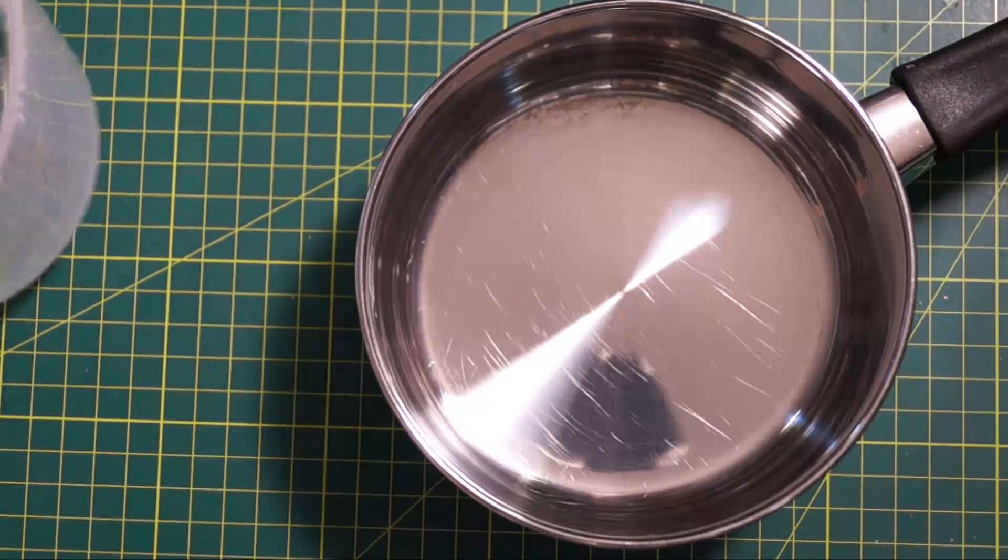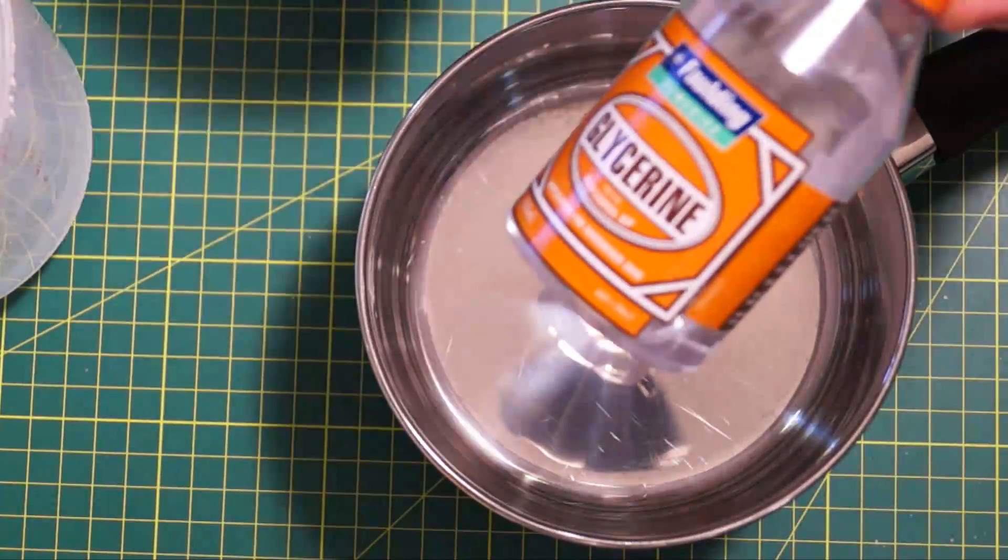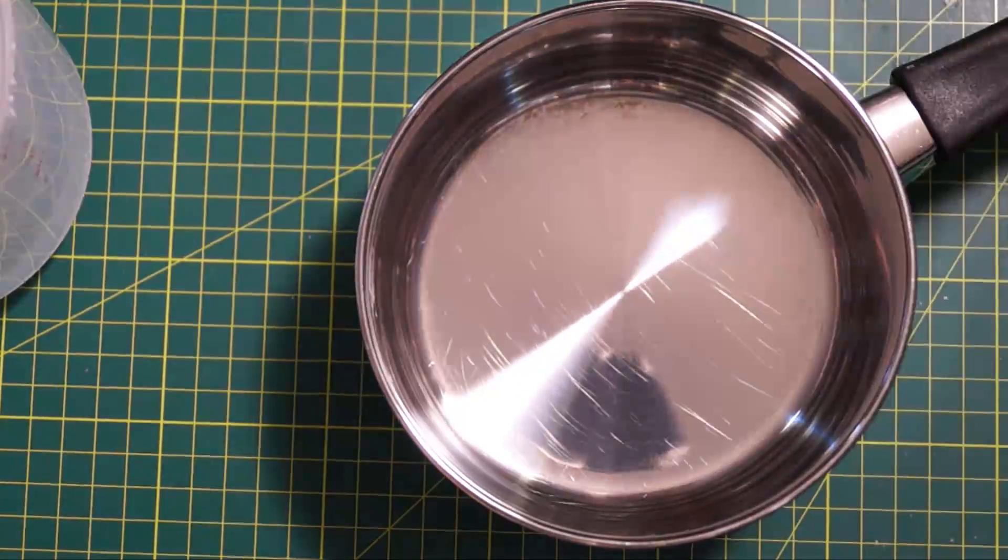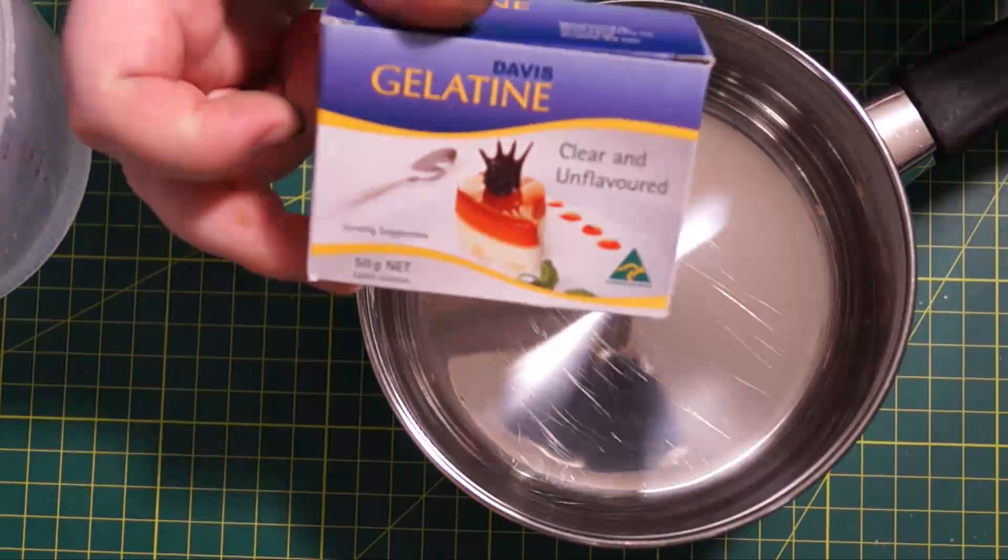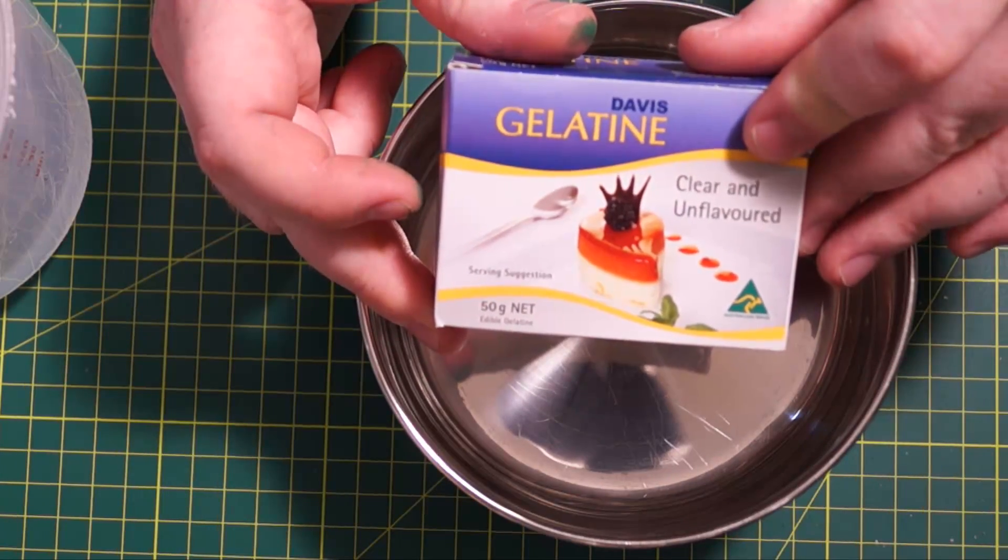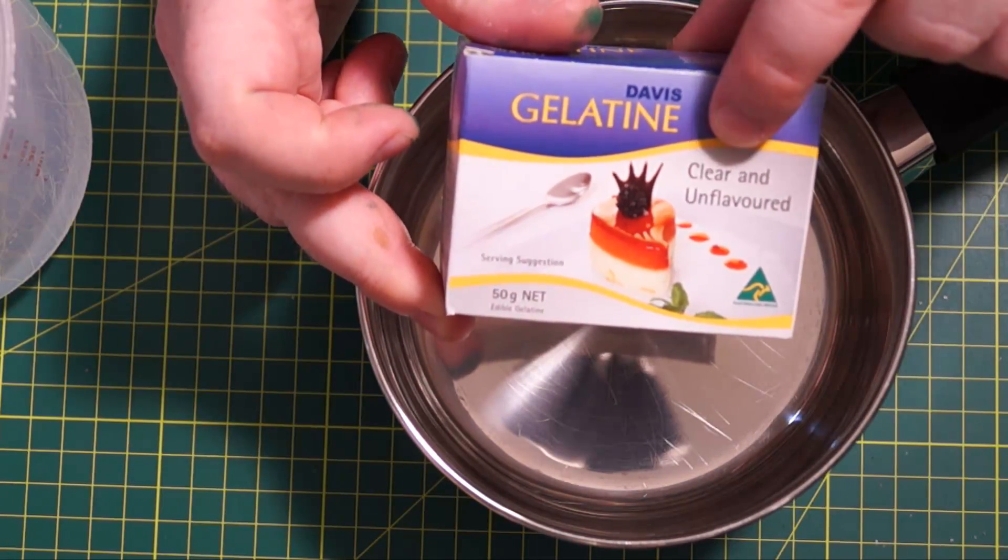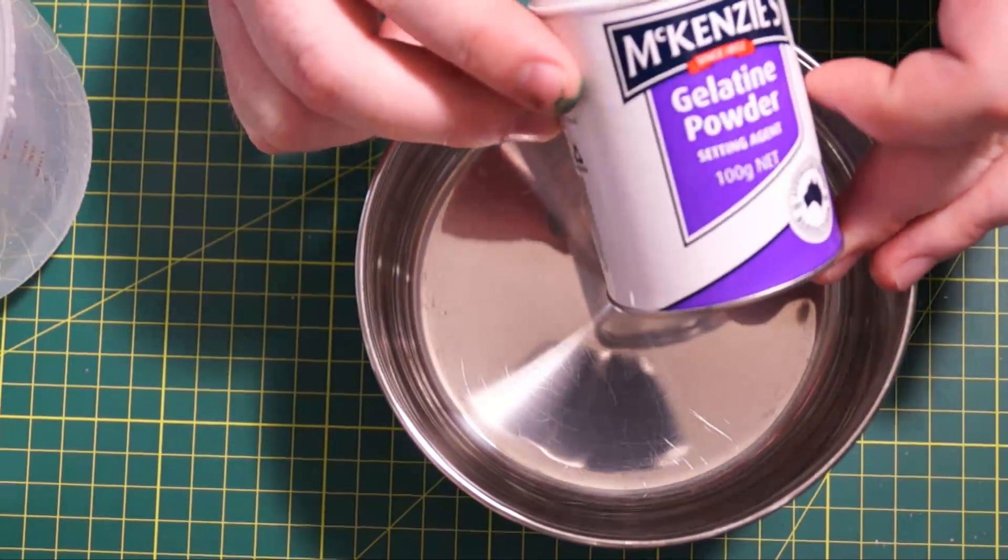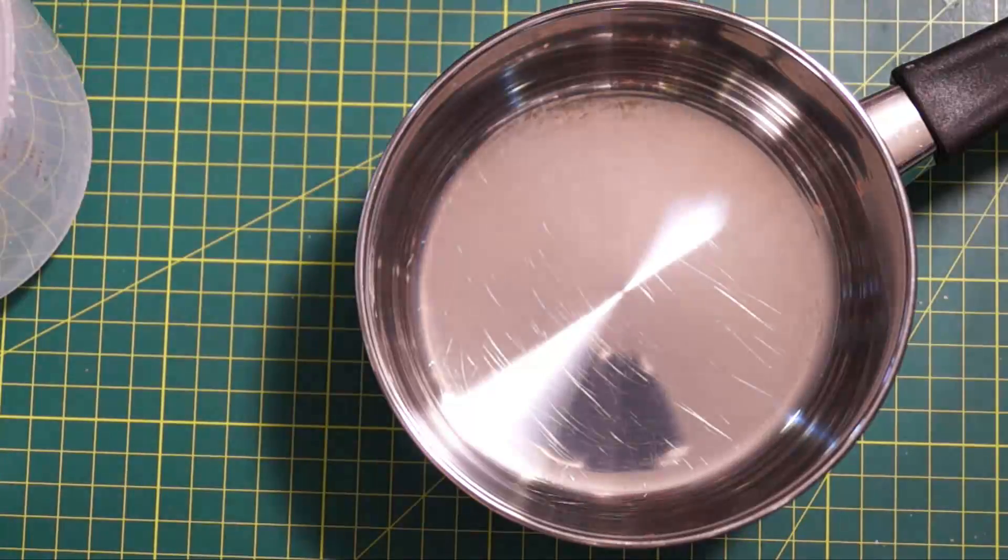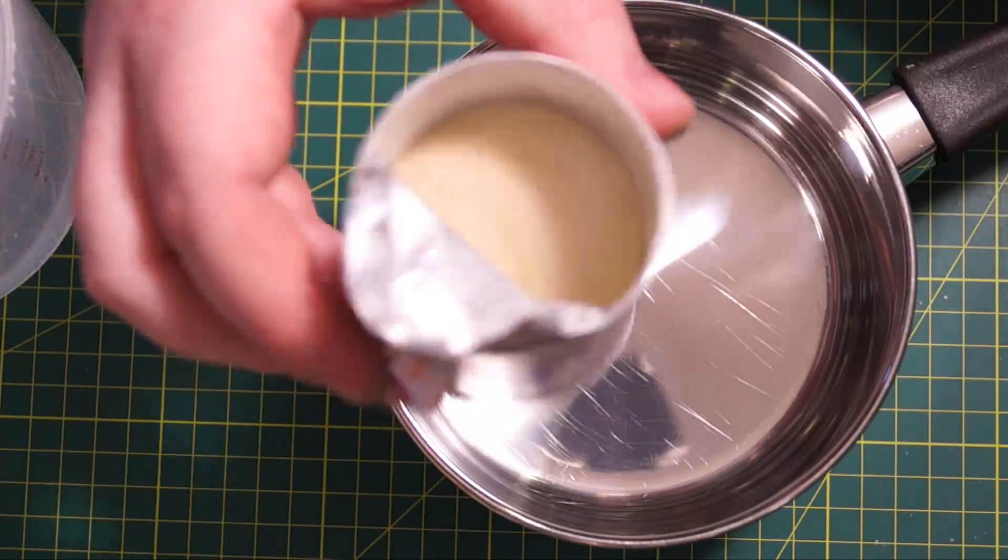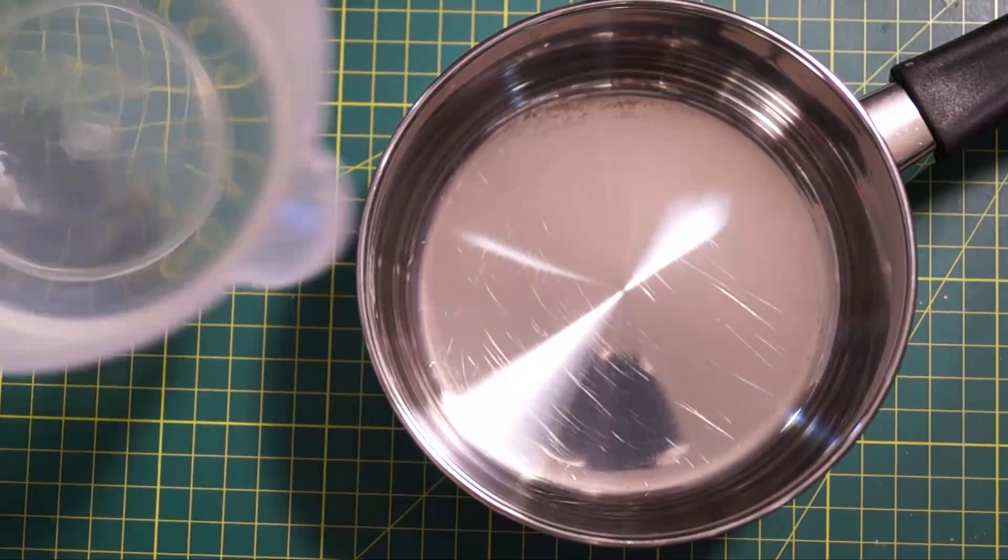So we're going to get 200 milliliters of water and 200 milliliters of glycerin. Conveniently this little bottle is 200 milliliters. And 50 grams of gelatin. It's preferable to have clear and unflavored gelatin. So don't get like raspberry and all that kind of stuff. It must be clear and unflavored. You can also get gelatin powder which basically comes in larger quantities. It's just I use the sachets because it's easier to measure them out.